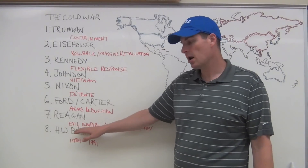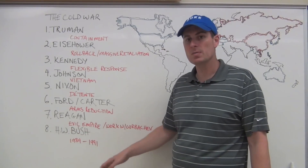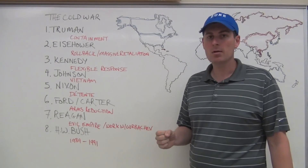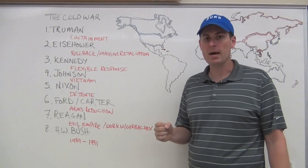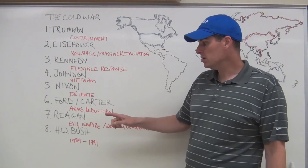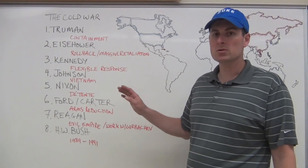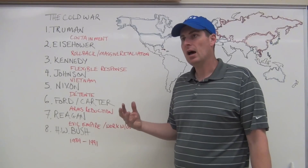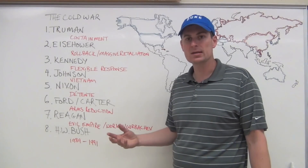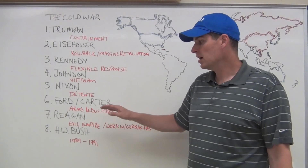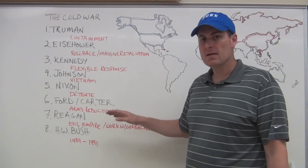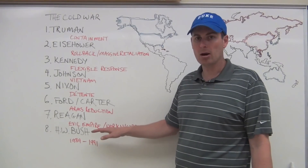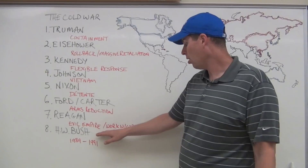Reagan starts out with the evil empire speech, bringing clarity that the Soviet Union is a great threat to freedom and security in the world — he just calls them out. What he does is launch a huge arms race, which significantly increases the national debt and hurts supply-side economics by ballooning that debt. But he spins the Soviet Union — even with the never-working SDI Star Wars system — into bankruptcy, because they are forced to keep matching him all along the way.